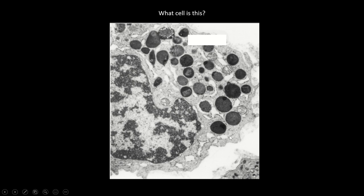What cell is this on EM? Look at the granules — this specific granule is very characteristic. This white blood cell has crystalline core granules: within one granule there are two different shades, meaning varying densities because it has a crystalline core inside. That is very characteristic of an eosinophil. Remember how to identify all the different white blood cells — crystalline core granules are the hallmark of eosinophils.